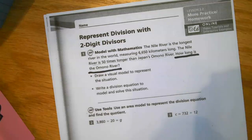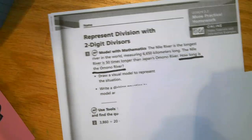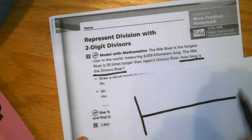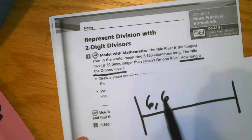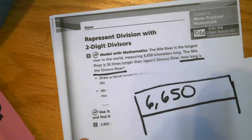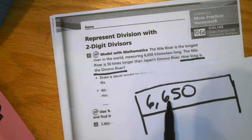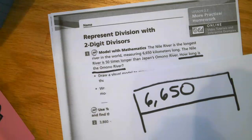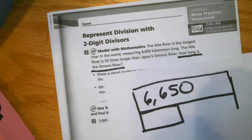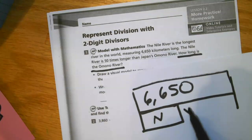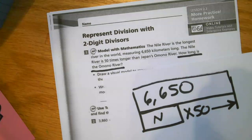I first want to make sense out of exactly what this question is asking me. It's asking how long is the Amano River, and the only information they've given me is the length of the Nile. So I know that the total length we have here for the Nile is 6,650 kilometers long. This bar model represents the length of the Nile. It also tells me that the Nile is 50 times larger than the Amano River. So whatever the length of the Amano River is — which I don't know — I'm going to represent that by N, because I know it's some number. I do know that the Nile is whatever this river's length is times 50. So if I find out this number times 50, I know it's going to equal 6,650. Now I know that multiplication and division are related.